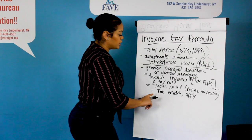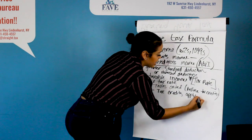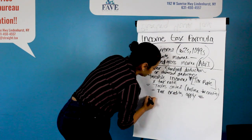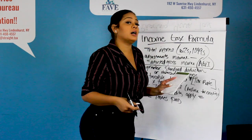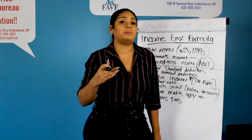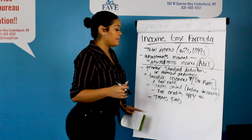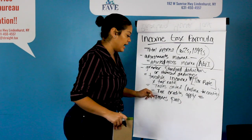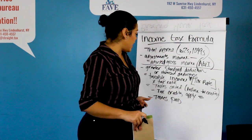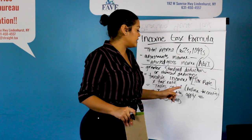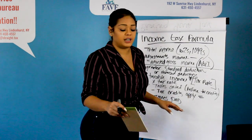Once we subtract any tax credits that may apply, we're also going to subtract the taxes that we've already paid. For those that are W-2 earners, you probably pay taxes within every paycheck or pay stub throughout the year. So once you get your taxable income, we multiply it by the tax rate, then subtract any tax credits that may apply, and then subtract from that any taxes that we may have paid throughout the year.